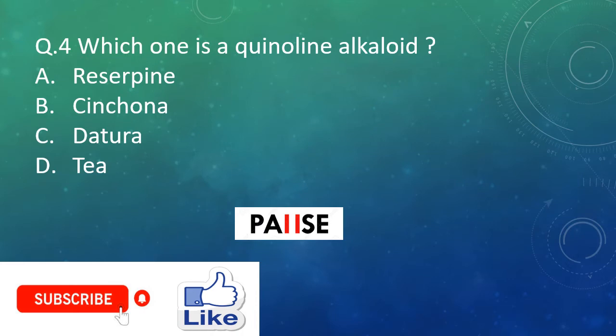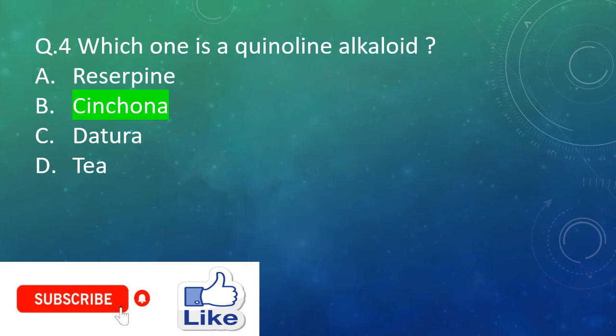Question four: Which one is a quinoline alkaloid? Option A: Reserpine. Option B: Cinchona. Option C: Datura. Option D: Tea. And the right answer is Option B: Cinchona. So cinchona is a quinoline alkaloid.